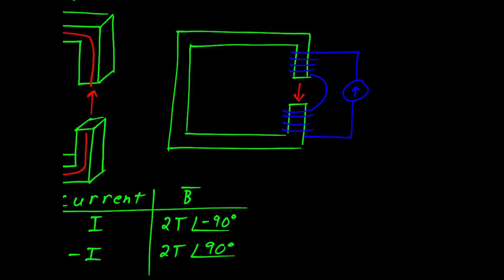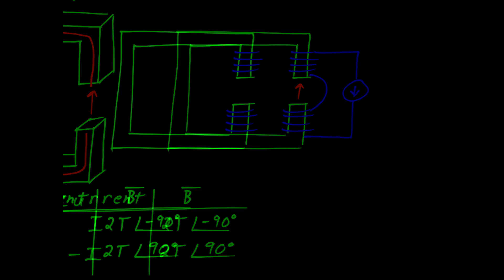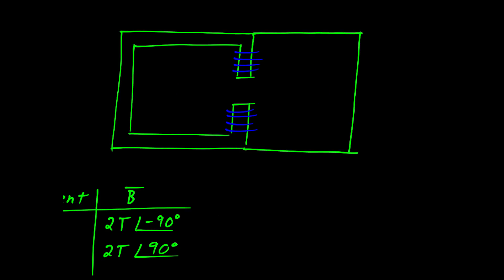Things start to get interesting when we modify the core. We could provide a second path for the magnetic flux as shown here. This does change the magnetic properties of the circuit, but that's not important to our discussion right now. What is important is that all of the flux lines will still pass through the electrical coils. All of the flux lines will still flow through this air gap.